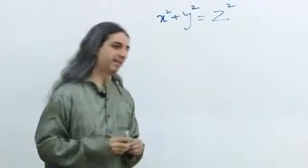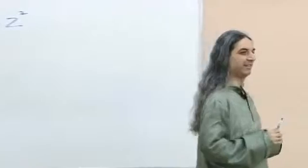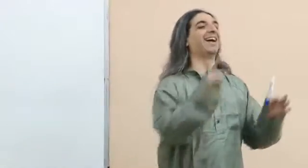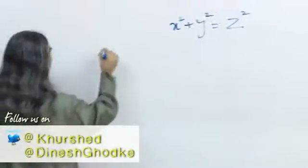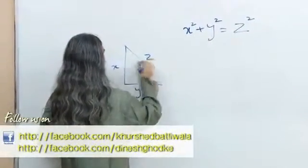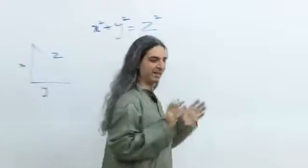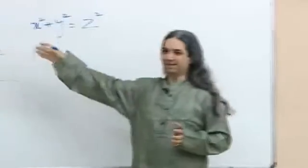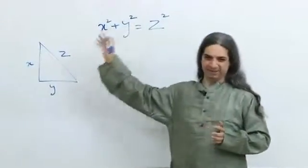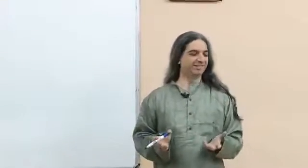What is this by the way? The Pythagoras theorem! Which states — very important, people forget this — that given a right angle triangle, if the three sides are X, Y, and Z, then X squared plus Y squared equals Z squared. That is what Pythagoras theorem states, and we say 'yeah, big deal, I know it.'